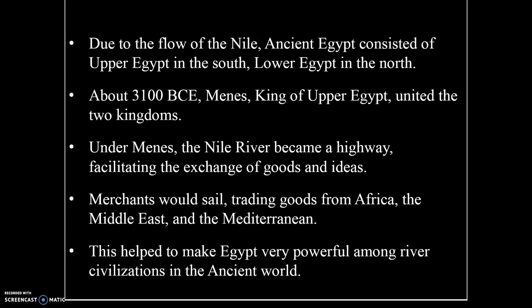As you may remember from our chapter, ancient Egypt was divided geographically into two major sections: Upper Egypt in the south and Lower Egypt in the north. Around 3100 BCE, Menes, the king of Upper Egypt, united these two kingdoms. The Nile River became bountiful not only for agriculture, but also for trade — merchants would sail up and down the Nile River through Africa into the Middle East, the Red Sea, and into the Mediterranean. So Egypt became a very powerful river civilization and indeed an empire.